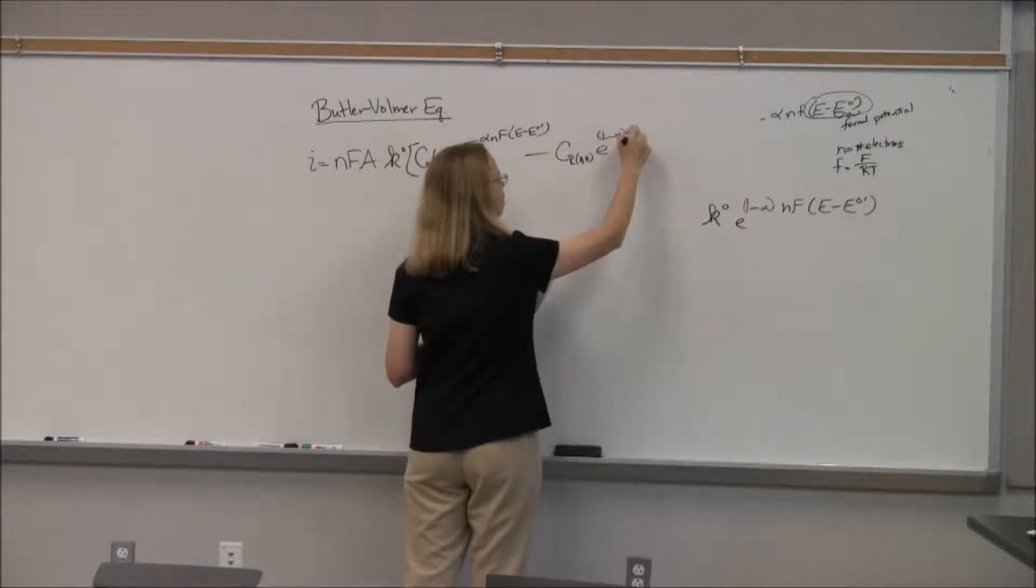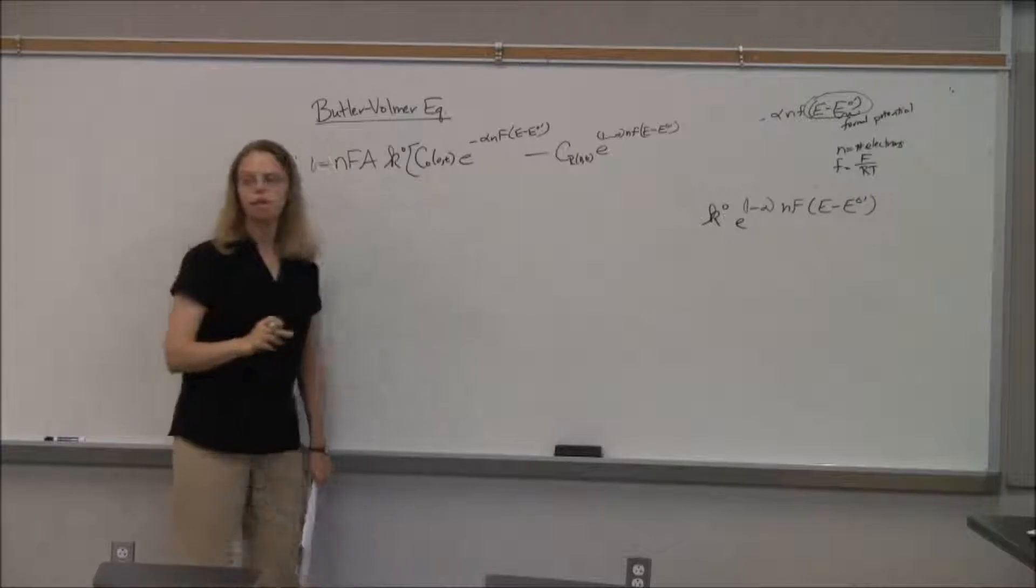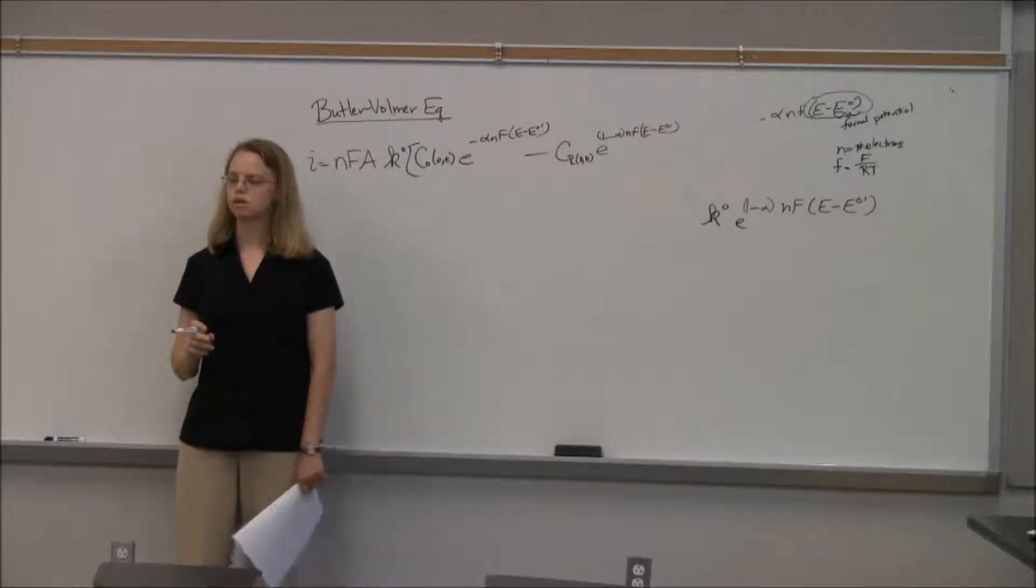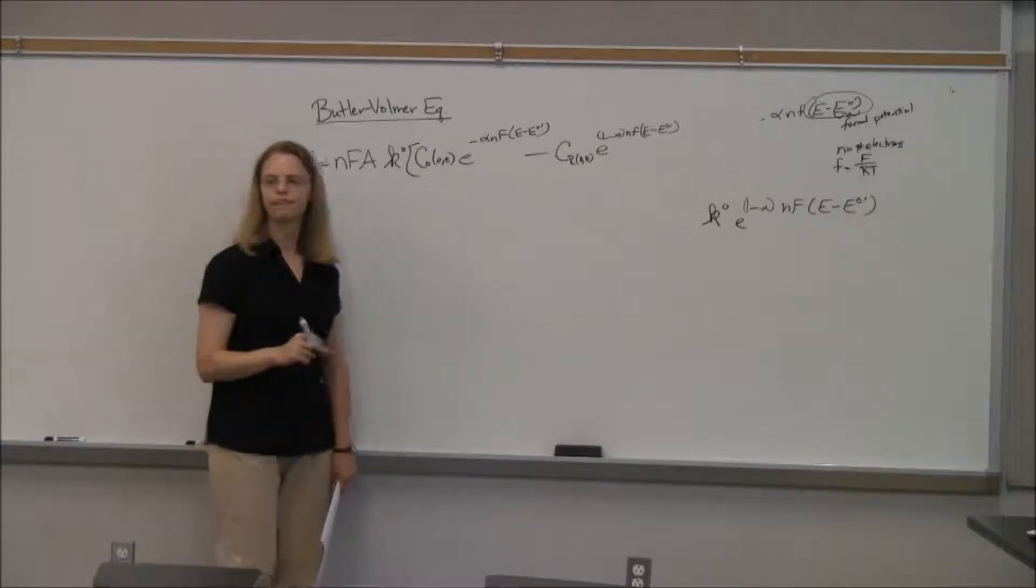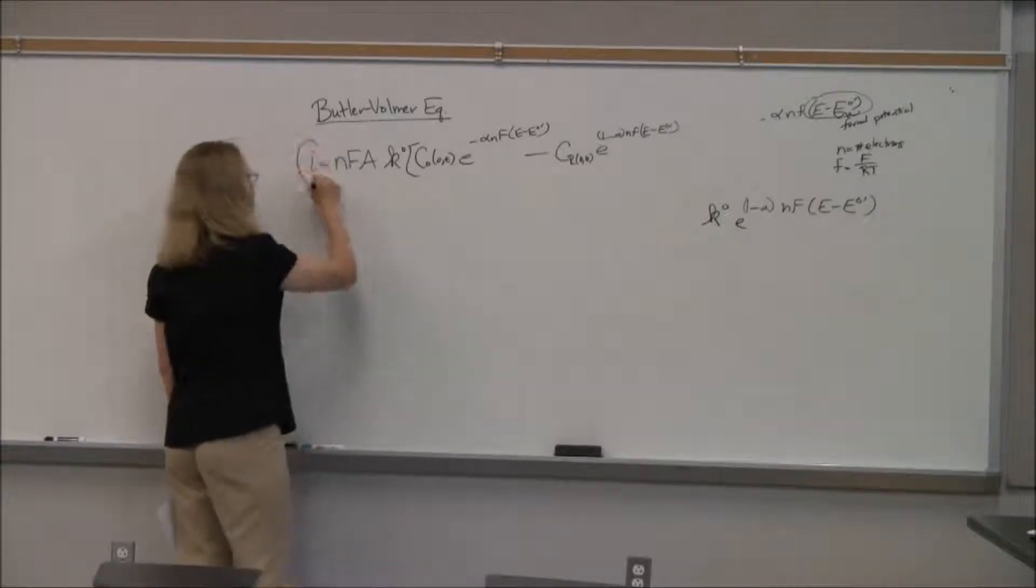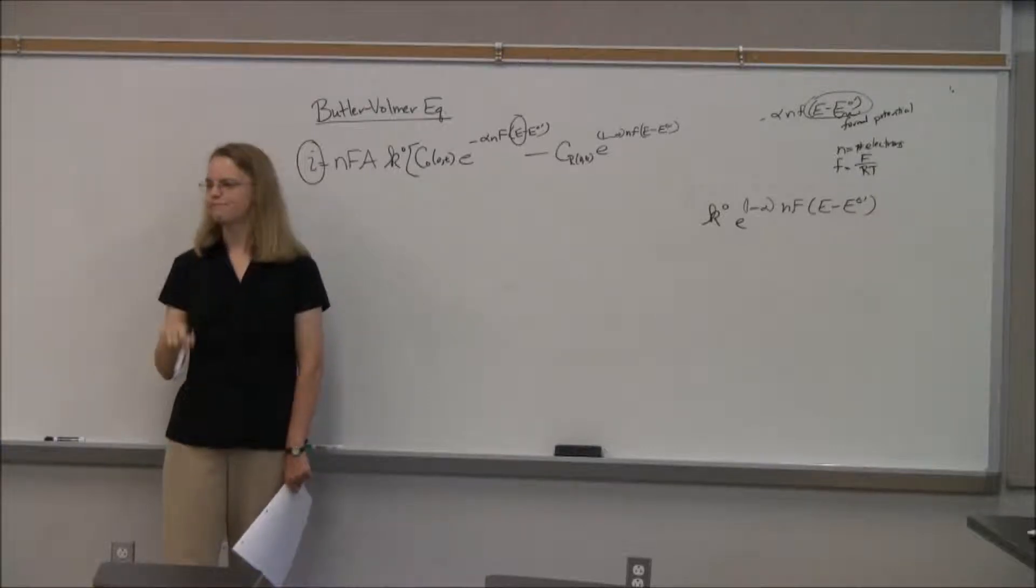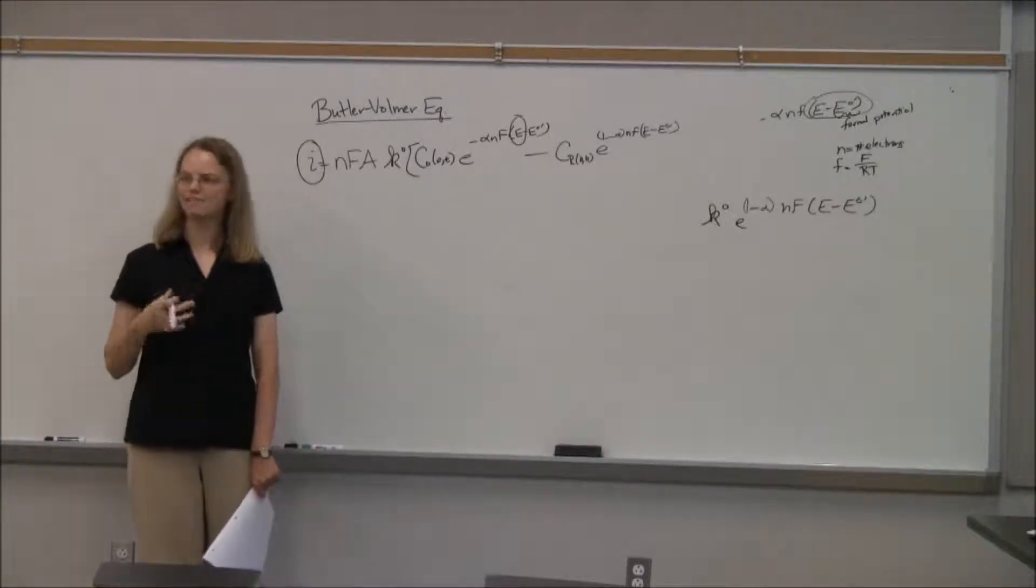And the Butler-Volmer equation says i is equal to nFA, remember I have the i over nFA on one side, I just moved the nFA over by multiplying, but that's not too bad. Times this K0 comes out because that's both in the Kf and the Kb. And now we have the concentration of O at the electrode surface times e to the minus alpha nf times e minus e0 prime. That's my K forward. I'm going to switch in the backward.